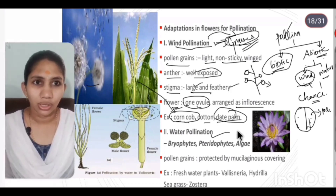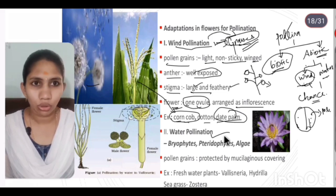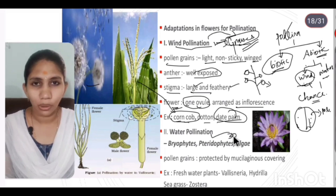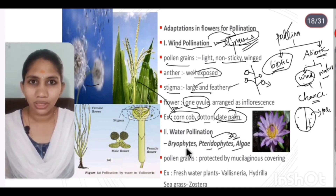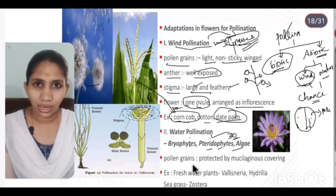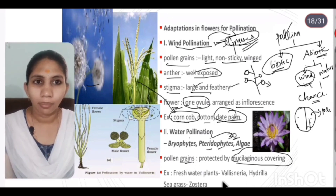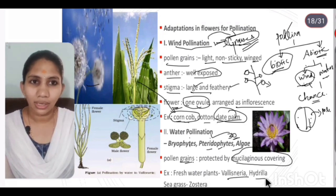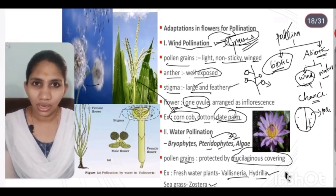Water pollination: pollen grains are carried to the stigma of the female flower via water. Only about 30 genera of plants have water pollination. Pollen grains in water-pollinated plants are protected by a mucilaginous covering, which prevents them from being destroyed by water. Examples include freshwater plants.